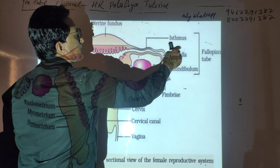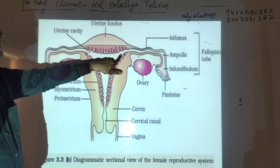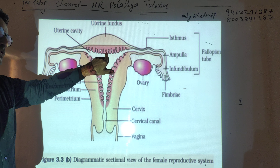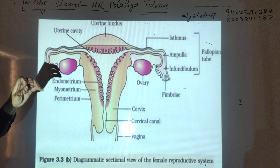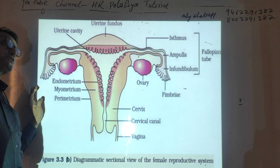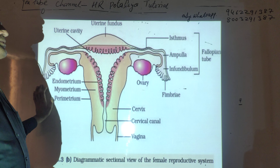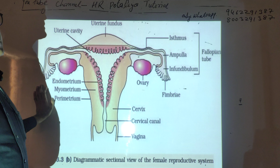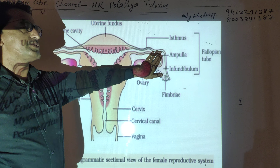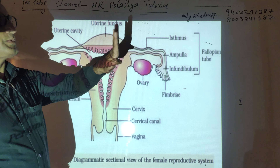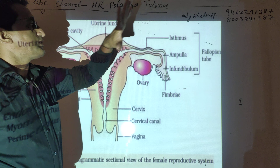Fertilization takes place at the isthmus, and the isthmus opens into the uterus. The fallopian tubes consist of epithelial tissue and smooth muscles. The fallopian tube has four regions: fimbriae, infundibulum, ampulla, and isthmus.